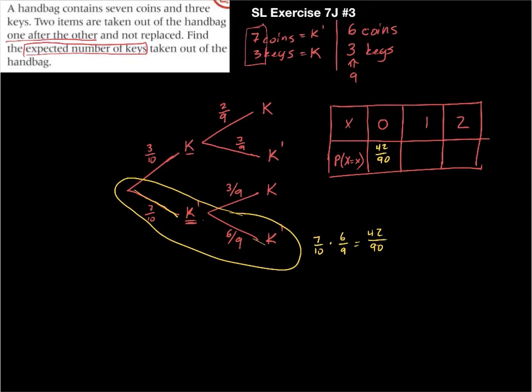Alright, so now I need to know what's the probability of getting one key or two keys. I'm going to go ahead and do two keys first because that's easy. There's only one way to get two keys, which would be three over ten times two over nine, which gives me a total of six over ninety.